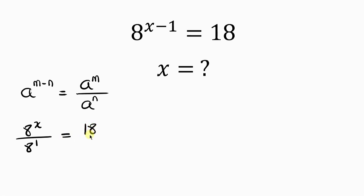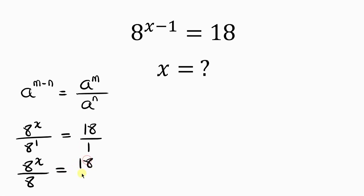Now, 18 is the same as 18 over 1. So this becomes 8 to the x all over 8 to the 1 is the same as 8, and this is equal to 18 all over 1.